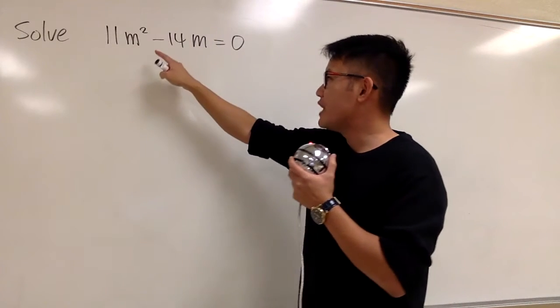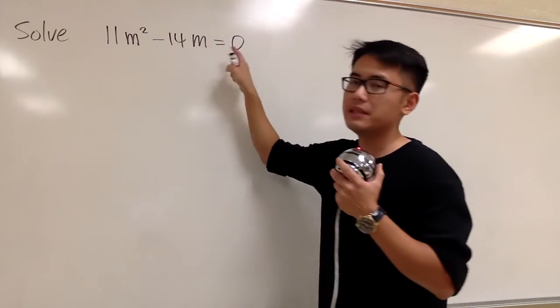Here we are going to solve this equation. We have 11m squared minus 14m is equal to 0.